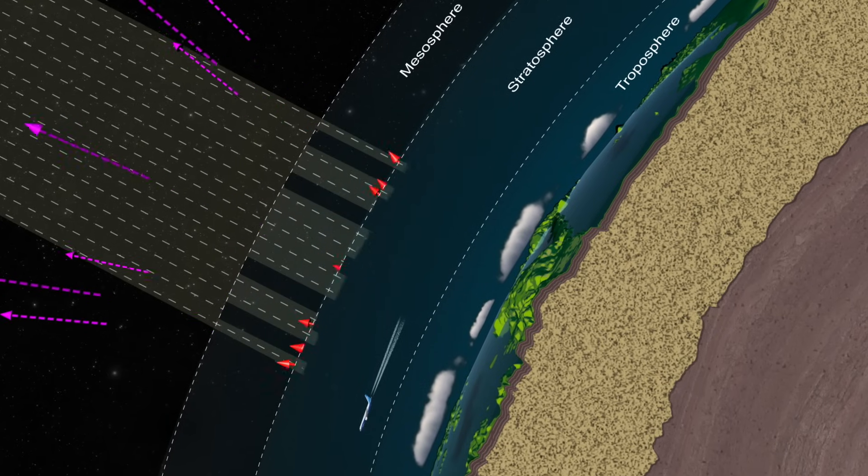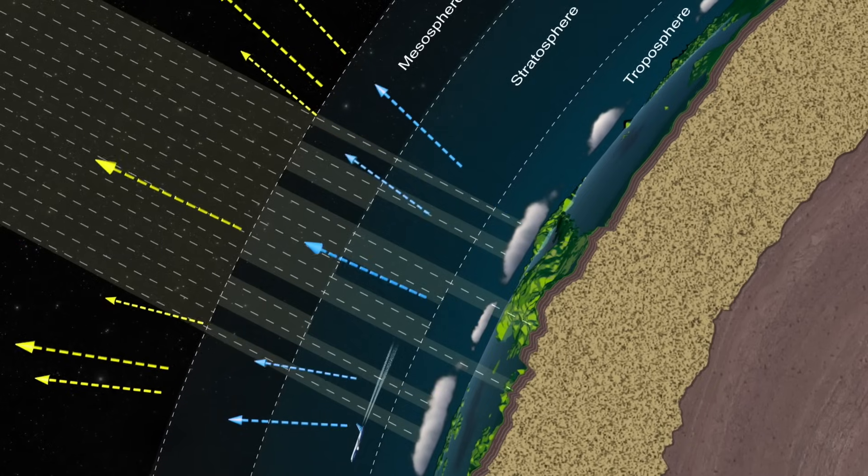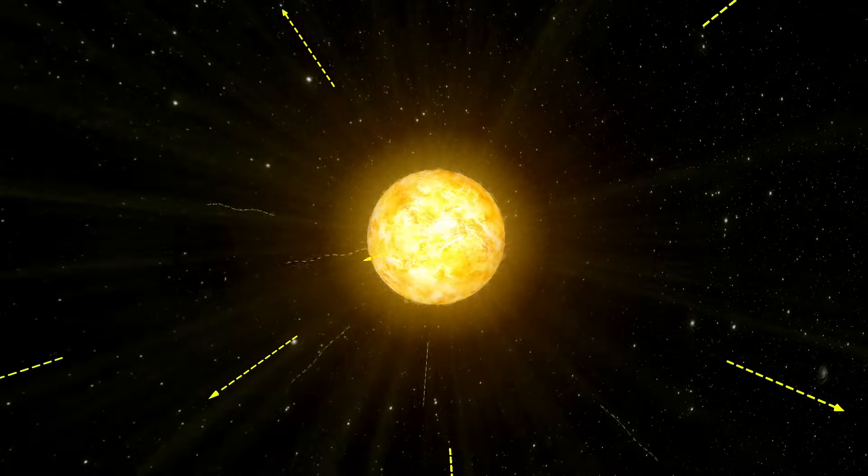Overall, the amount of energy leaving the planet is equal to the amount coming in, and Earth's energy budget stays roughly in balance. And it's a delicate balance.